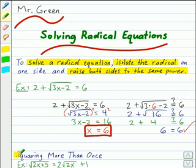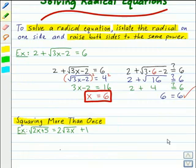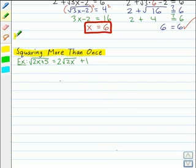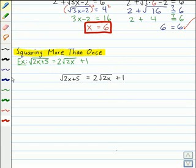Now sometimes you may have to square both sides of the equation more than once. In this second example, we have a radical on both sides of the equation. Since the one on the left is already isolated, let's go ahead and square both sides to eliminate the radical on the left side. That will give us 2x plus 5 equals 8x plus 4 times the square root of 2x plus 1.